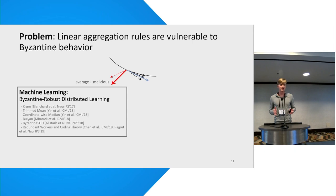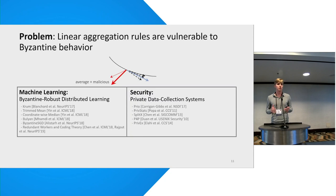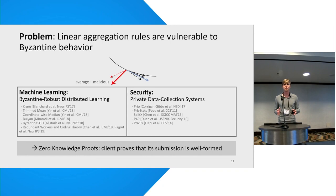This is not a new problem — we know that linear aggregation rules are vulnerable to Byzantine behavior, and this has been studied extensively in the context of distributed machine learning, where a single Byzantine worker can force the parameter server to choose an arbitrary vector. This problem is also known in security, particularly in the context of private data collection systems, where a malicious client can send an encryption of an invalid value. The general approach taken in security to solve this problem is to rely on zero-knowledge proofs, so the client proves that its submission is well-formed.